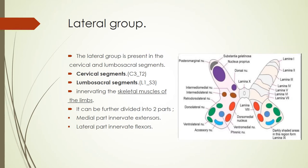The lateral group is the most important group. Like the central group, it is also present only in some cervical and lumbosacral segments. In the cervical segments it extends from the third cervical to the second thoracic spinal segment, and in the lumbosacral part it extends from the first lumbar to the third sacral spinal segments — the areas of cervical and lumbosacral enlargements where gray matter is maximum. The lateral group innervates the skeletal muscles of the limbs and can be further divided into two parts.